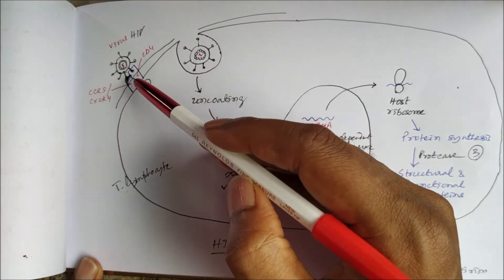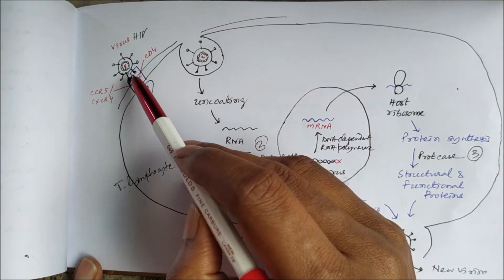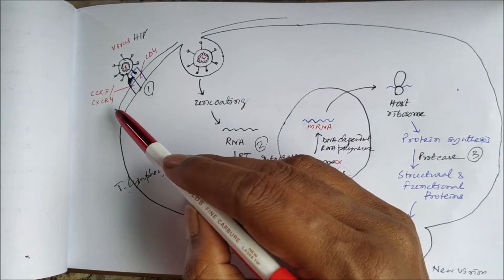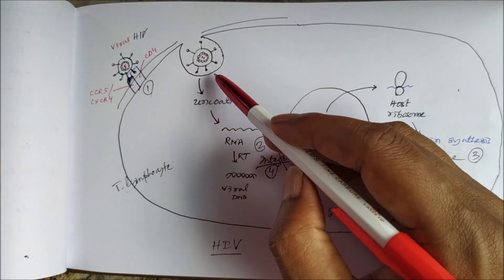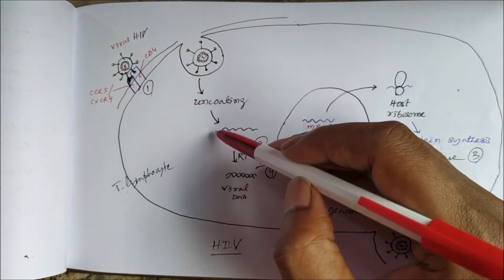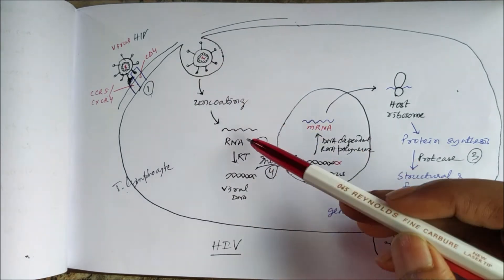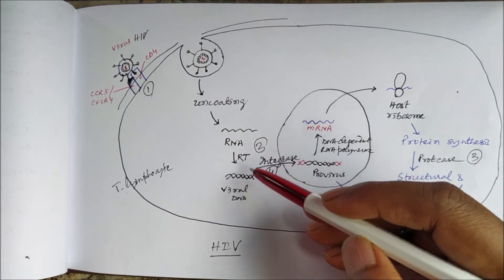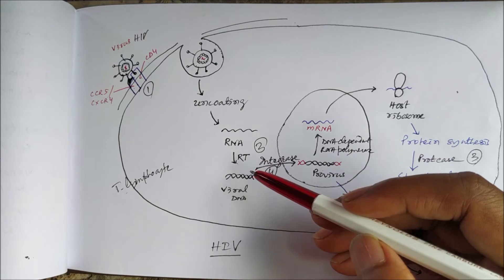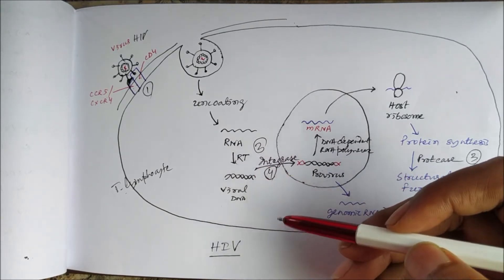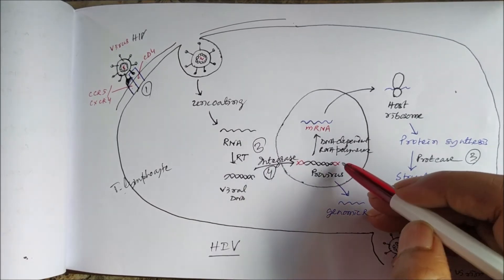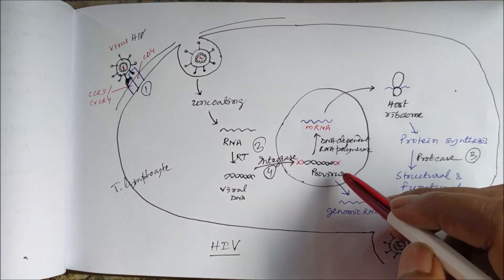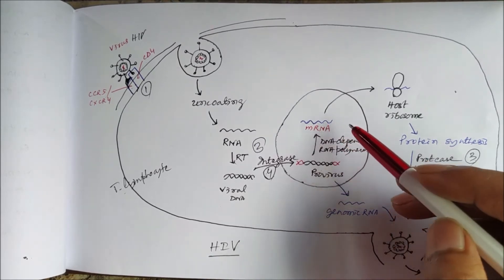There is interaction of gp120 and gp41 with CD4 and CCR5 or CXCR4, allowing penetration into T lymphocytes followed by uncoating. The virus releases its RNA, and its own reverse transcriptase converts the RNA to viral DNA. This viral DNA then integrates with the host cell DNA to form the provirus.